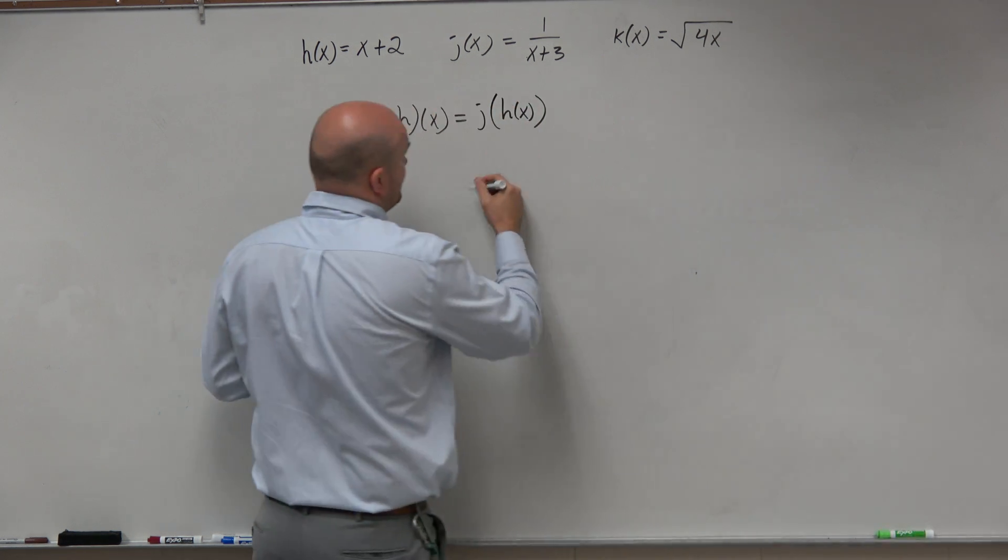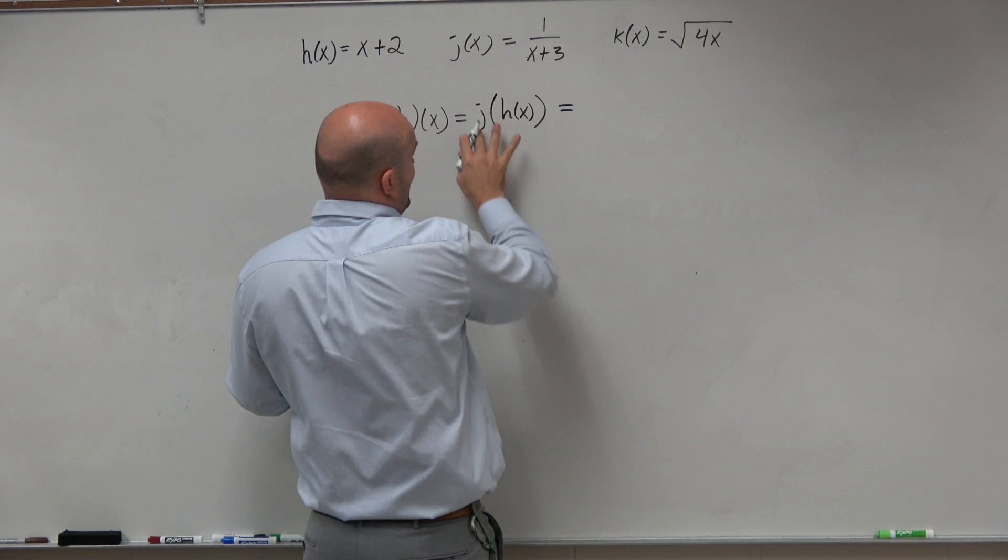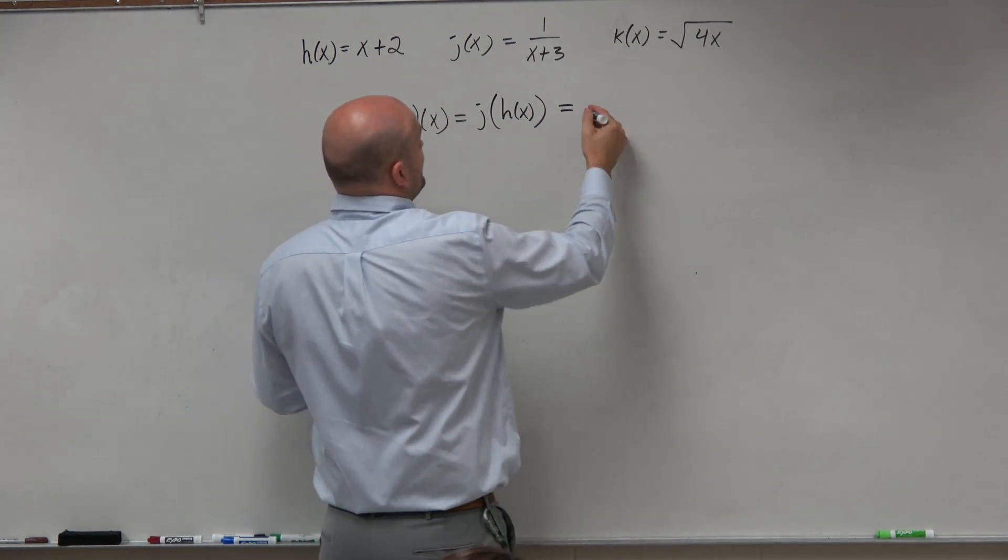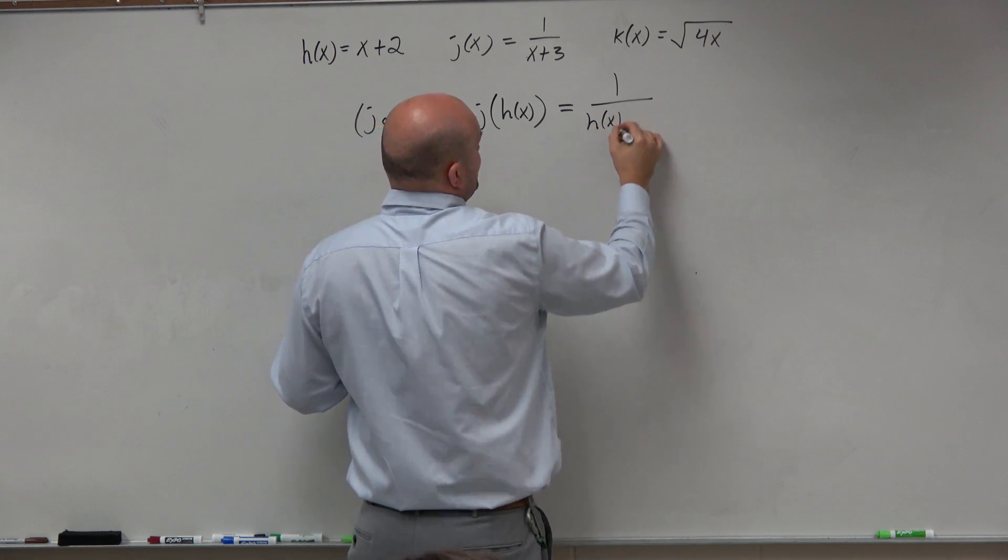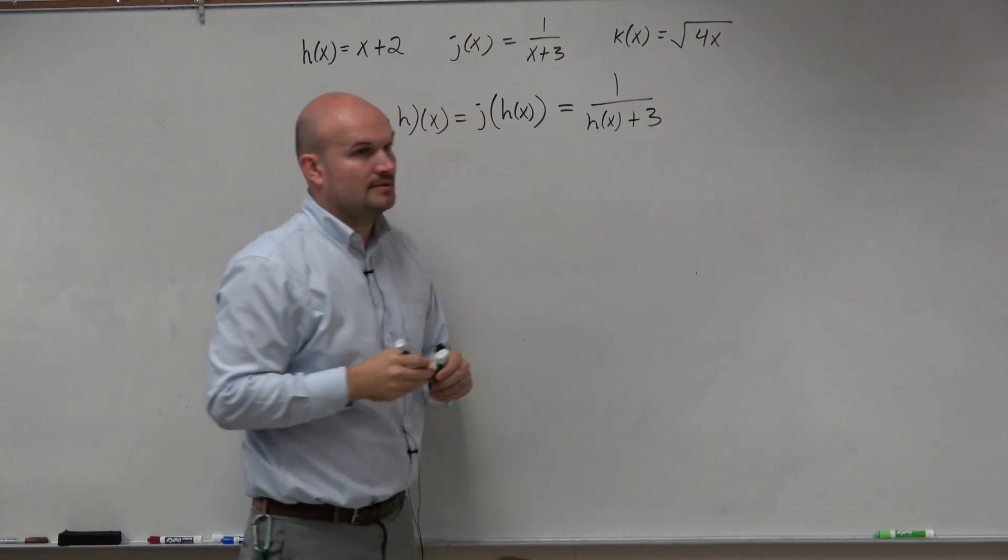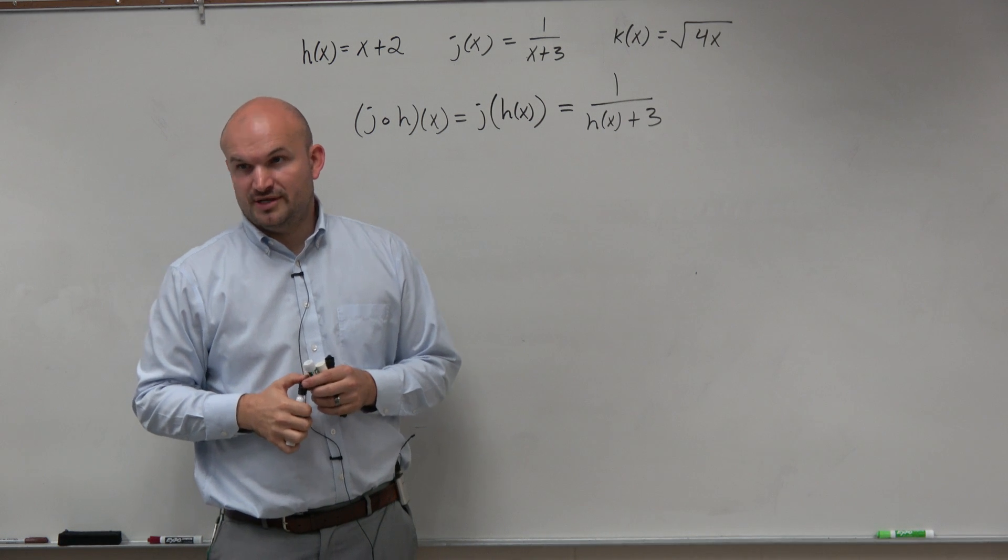So what that really is saying is I'm going to take j of x and I'm going to plug in h of x for my input value. So, therefore I'm going to have 1 over h of x plus 3. Do you guys see what I did?